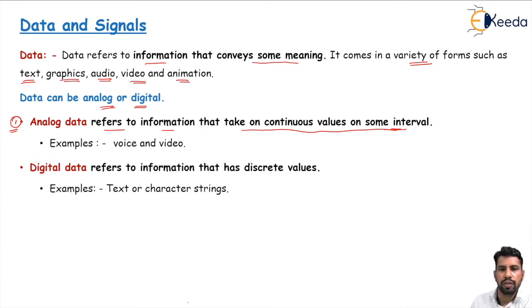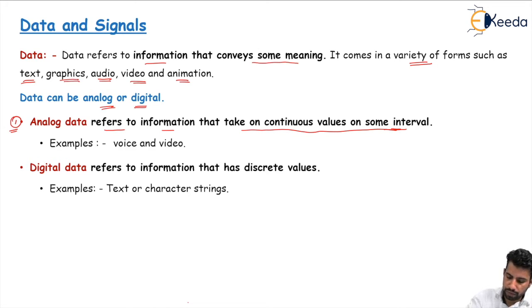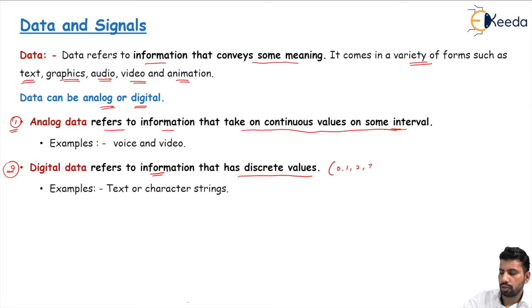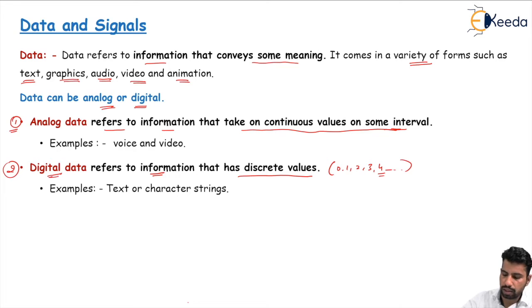When you want to convert analog data into digital signals, you can do so using modulation techniques. The second type is digital data. Digital data refers to information that has discrete values — you can represent this data in the form of simple values like 0, 1, 2, 3, 4. You have some defined, uniquely identifiable values for each data item.